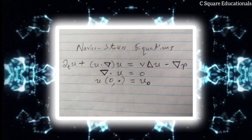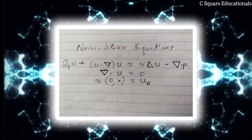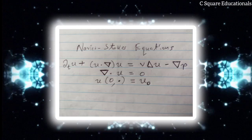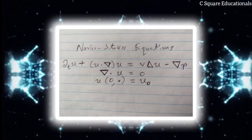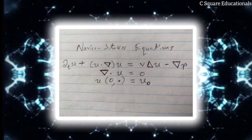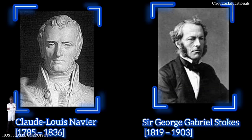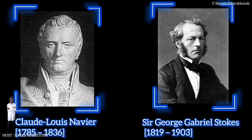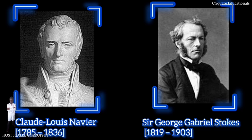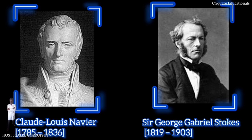Did you know that Navier-Stokes equations are partial differential equations? In physics, Navier-Stokes equations are partial differential equations which describe the motion of viscous fluid substances, named after the French engineer and physicist Claude-Louis Navier and Anglo-Irish physicist and mathematician George Gabriel Stokes. They were developed over several decades of progressively building the theories from 1822 (Navier) to 1842–1850 (Stokes).